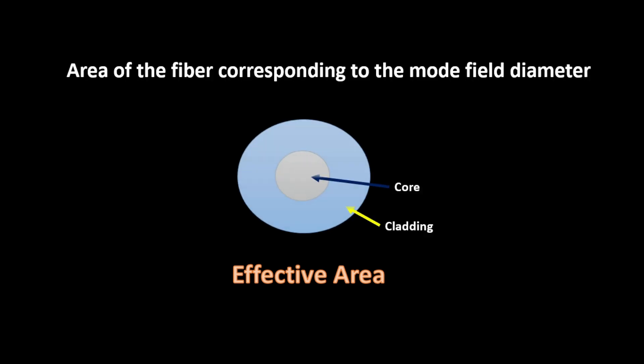Effective area is another term used to define the mode field diameter. The effective area is the area of the fiber corresponding to the mode field diameter.